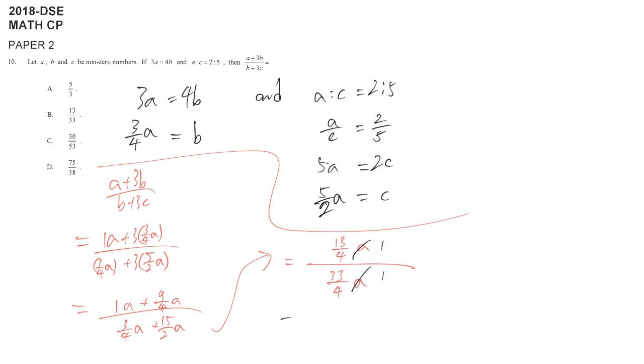So we just need to handle 13 over 4 divided by 33 over 4, then you get 13 over 33.